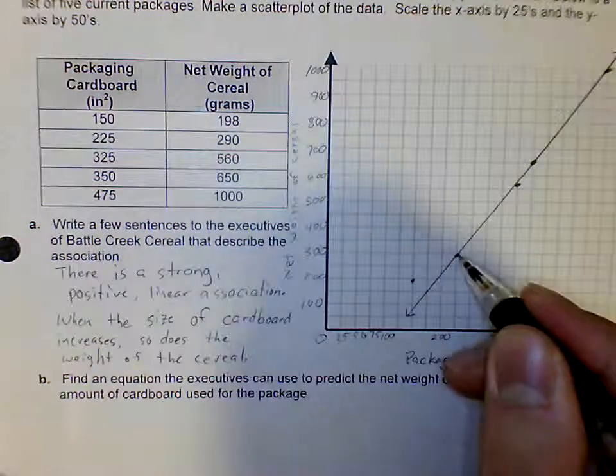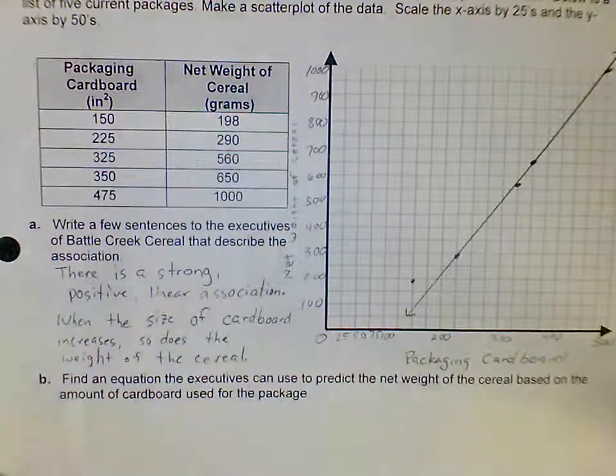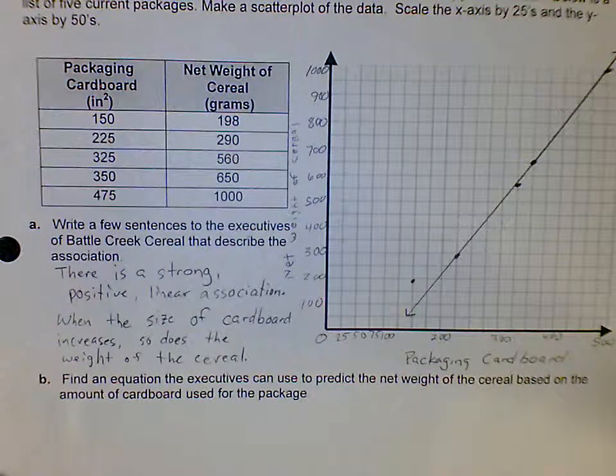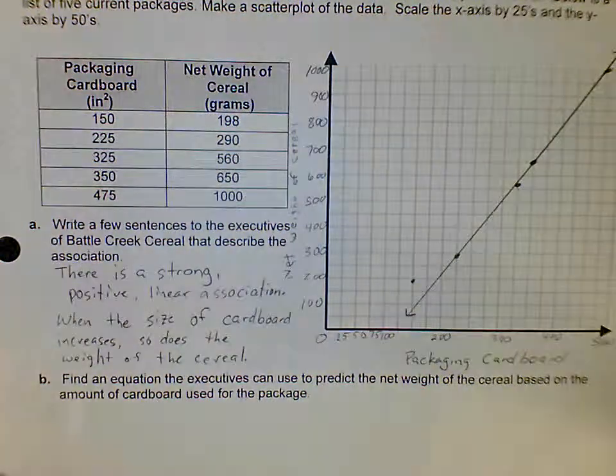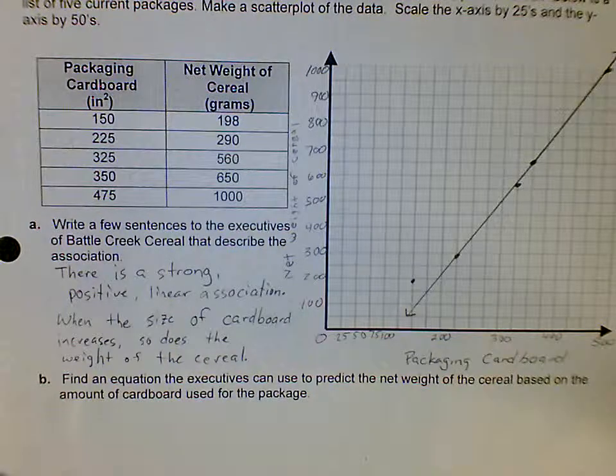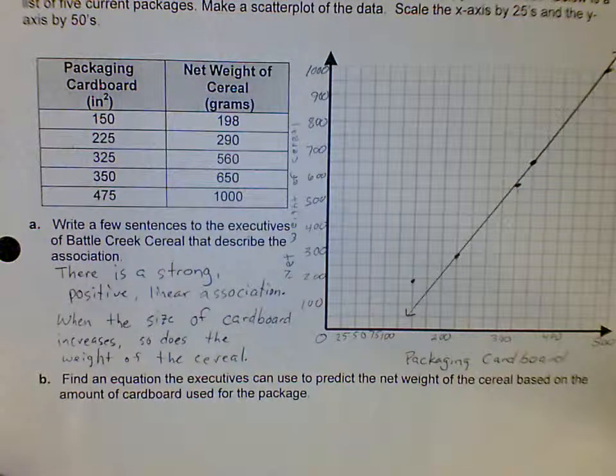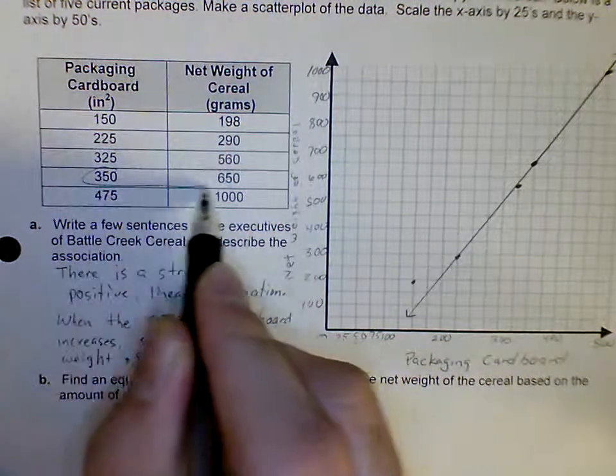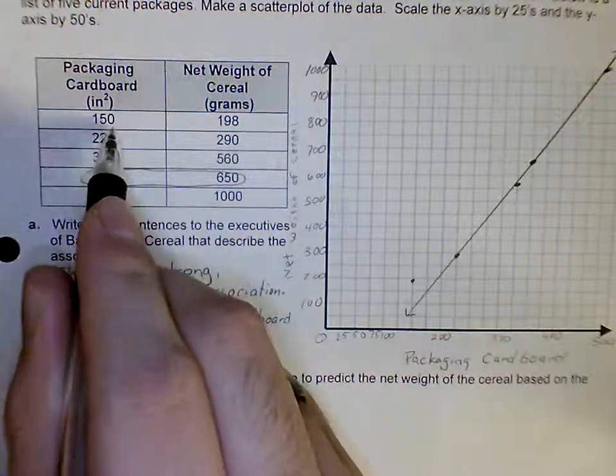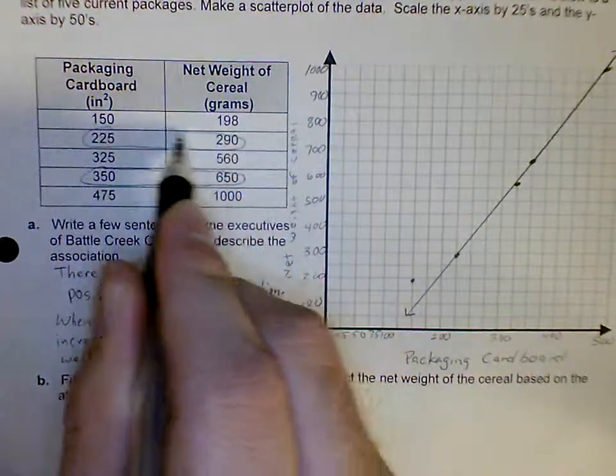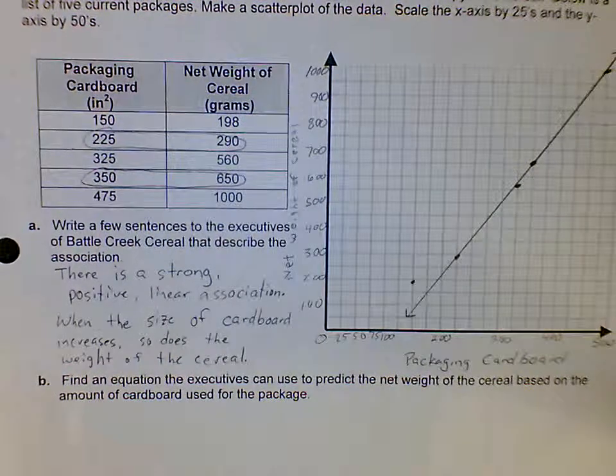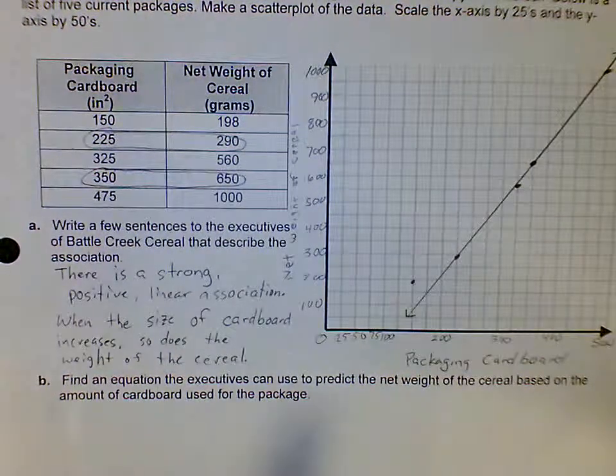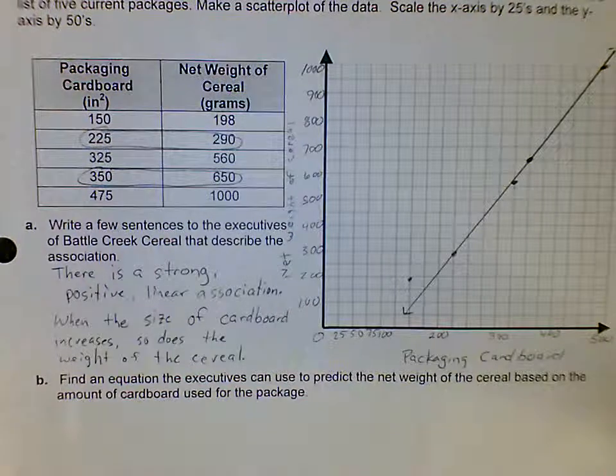As you can see, I picked this dot which is 225 comma 290, and then I picked this dot which is 350 comma 650. So I picked that fourth point and I picked the second point. Once again, if you pick two different points there's nothing wrong with your answer. It is going to look a little bit different but it will still be close to mine.